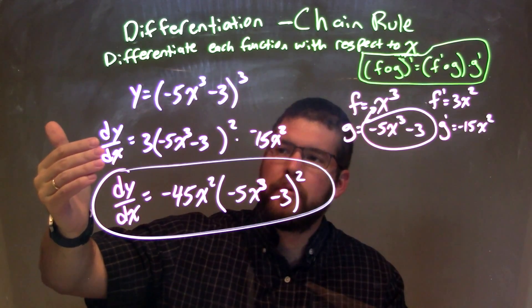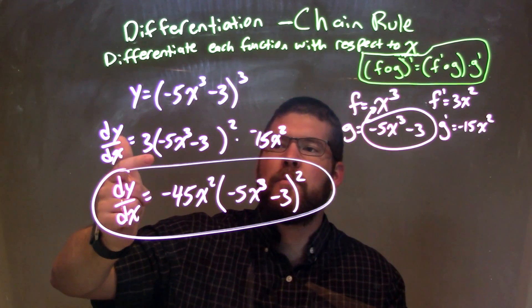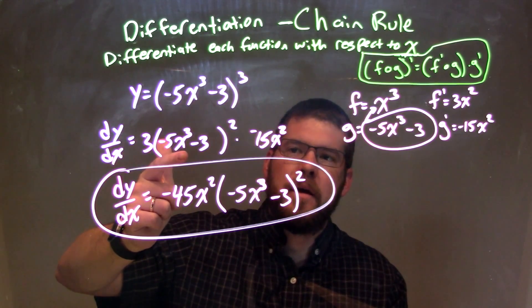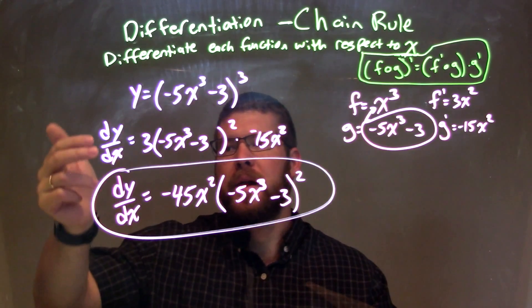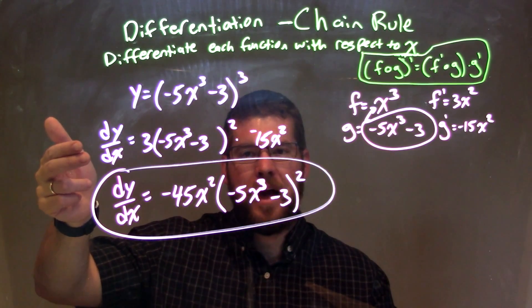Then when I took my derivative using the chain rule, I took f prime of g, right there, multiplied by g prime. At this point, I have my derivative, so the rest is just algebra to simplify.